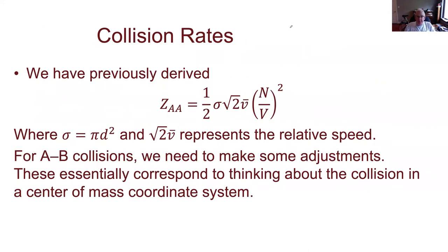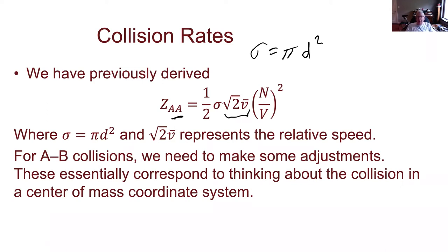The equation we derived earlier is labeled Z_AA, where the AA piece reminds us this is for molecule A colliding with another molecule A — the same species. In that equation, we have sigma, which was equal to π d², where d was the diameter of the molecule. The square root of two is in there because that gives us the average relative speed of approach for two molecules. The one-half on the front was there because we didn't want to count the same collision twice — every collision had two A's involved. The N/V on the end is the number density of the gas, squared because we need two molecules to have a collision.